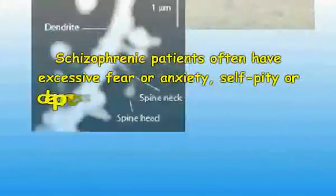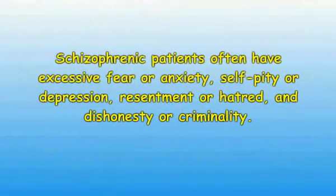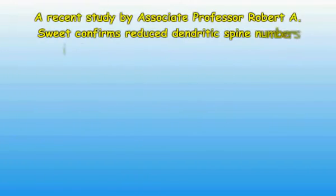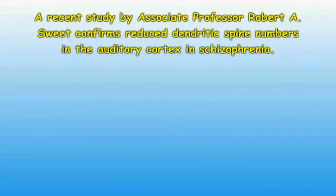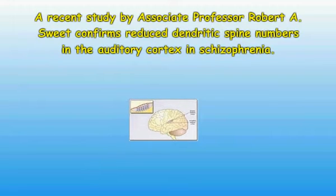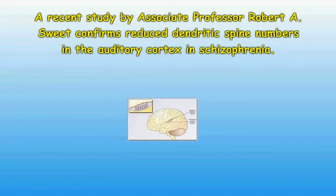Reduced dendritic spine numbers are associated with fear, self-pity, resentment, and dishonesty when the frontal lobes are affected. Schizophrenic patients often have excessive fear or anxiety, self-pity or depression, resentment or hatred, and dishonesty or criminality. A recent study by Associate Professor Robert A. Swerdlow in Psychopharmacology confirmed that dendritic spines were reduced in the part of the brain where sound is perceived, known as the auditory cortex.